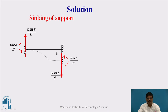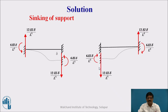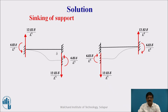The support reactions produced due to sinking are 12EI·δ/L³. Similarly, if the left-hand support sinks down, the moments produced are clockwise — 6EI·δ/L² — and the reactions form an anti-clockwise moment. Whenever sinking of a support takes place, we consider a moment of 6EI·δ/L² at both supports, where delta is the amount of sinking.